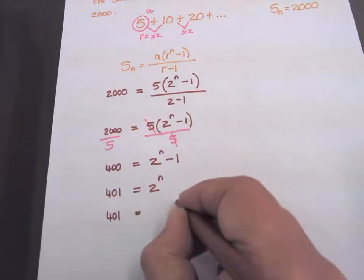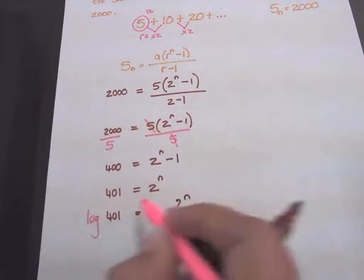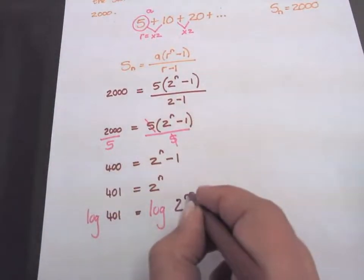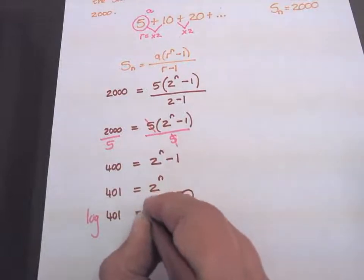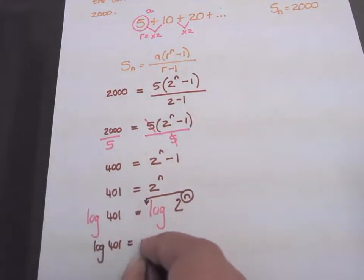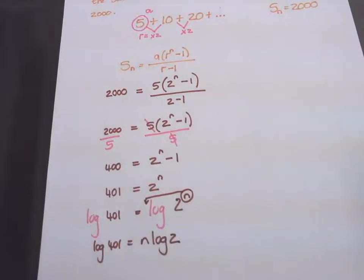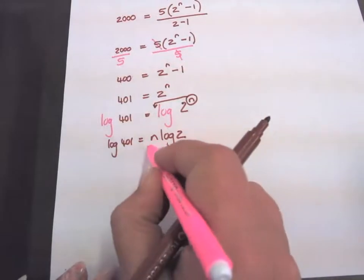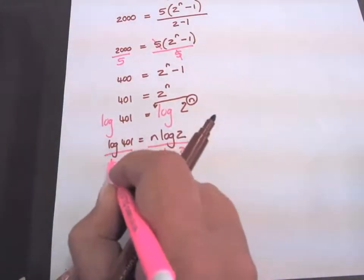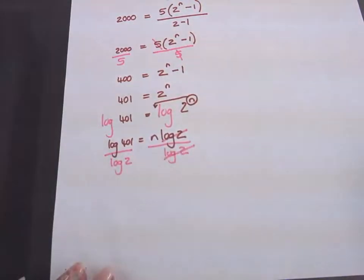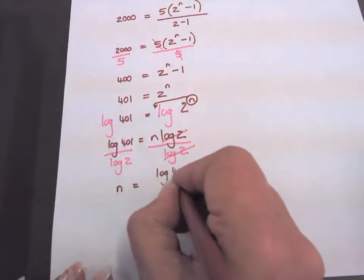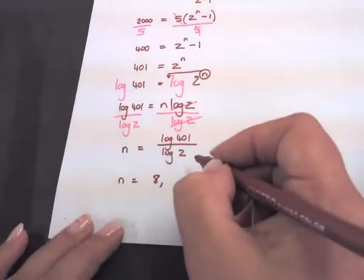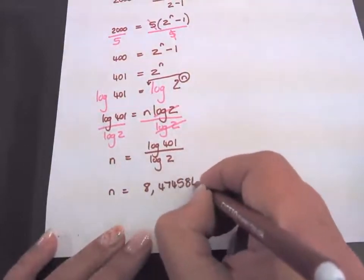I'm going to insert my logs. So the log of 401 equals the log of 2 to the power of n. Take this n to the front: log 401 equals n times log 2. I want to solve for n, so I'm going to divide with log 2. And then you get 8.647584 etc.